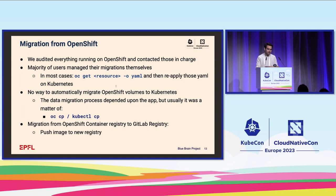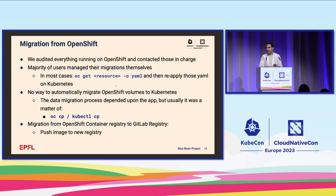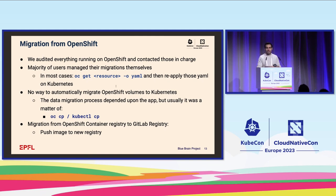In Q3 of 2021 we had this new Kubernetes cluster up and running, but we were also still running the old OpenShift in parallel. At that time we audited everything running on OpenShift and contacted the responsibles for those deployments. Luckily, the majority of users and developers managed to migrate their applications by themselves — in most cases it was just a matter of exporting the resource as a YAML file and re-importing it into Kubernetes. Unfortunately there was no way to automatically migrate volumes from OpenShift to Kubernetes — although both used NetApp as backend, the drivers were different, so users needed to copy the contents from one volume to the other. Finally, migrating container images was easy: users just needed to push existing images into the new GitLab registry.